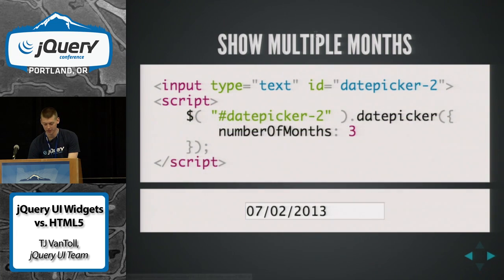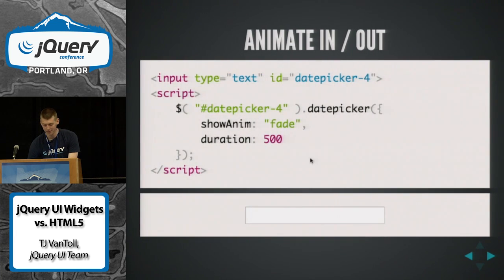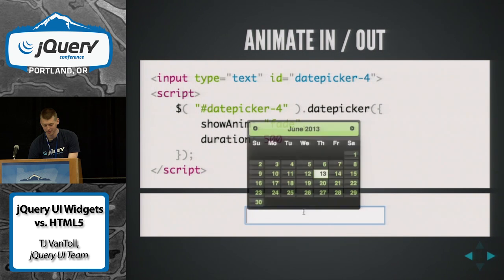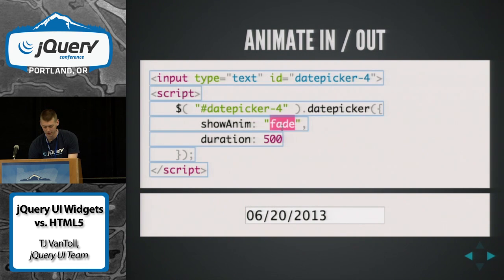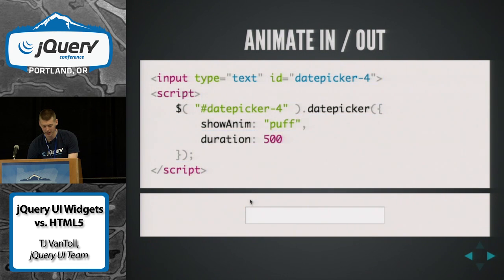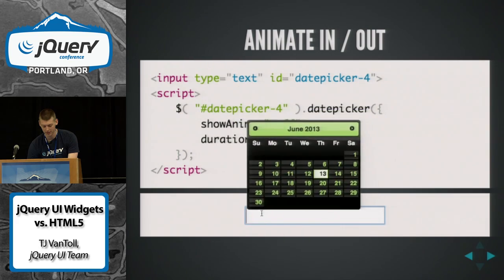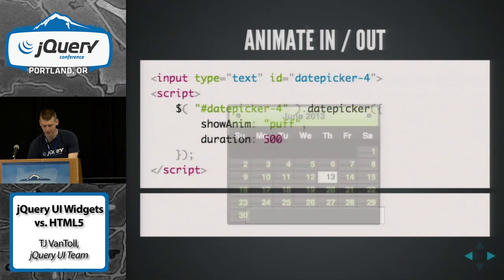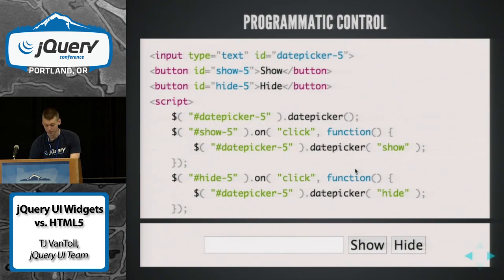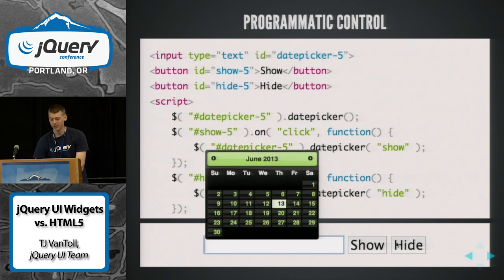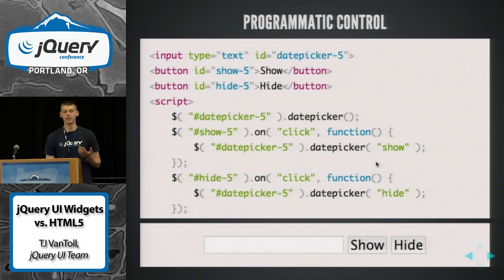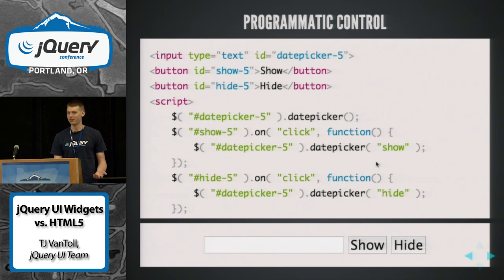You have full control over the look. You can do things like show multiple months, animate them — it's got the full UI effects library behind them. You can show and hide them, and even something this basic — just changing the display — is something you can't do with the native control.